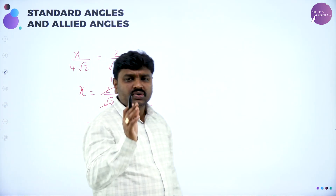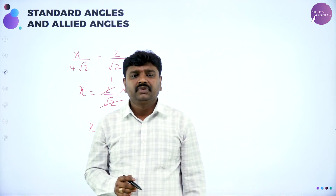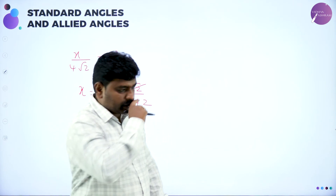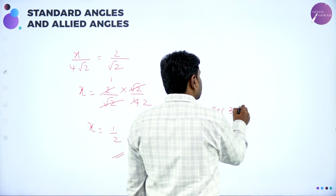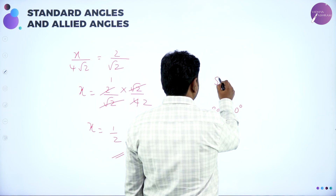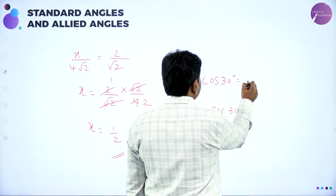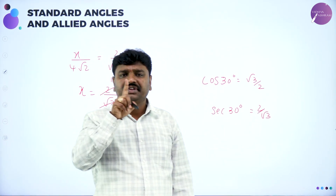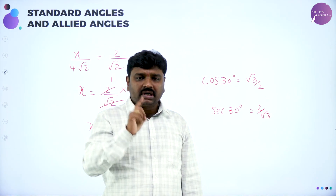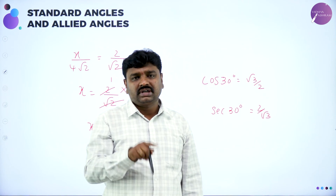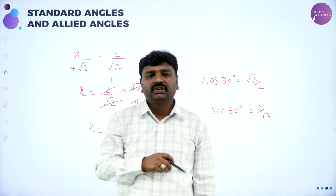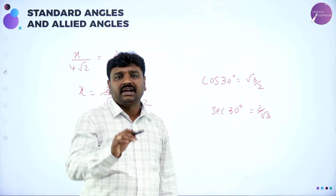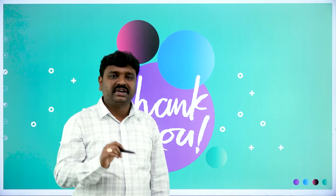These are the values. In order to solve all the problems we've done today, you can only solve them if you are thorough with the standard angle table and reciprocals. For example, sec 30 is the reciprocal of cos 30. Cos 30 = √3/2, so sec 30 = 2/√3. Remember: cosec = 1/sin, sec = 1/cos, cot = 1/tan. Standard angles are 0°, 30°, 45°, and 60°. All the problems we did today are based on standard angles. Practice the problems and I'll see you in the next session. Thanks for attending. Thank you.